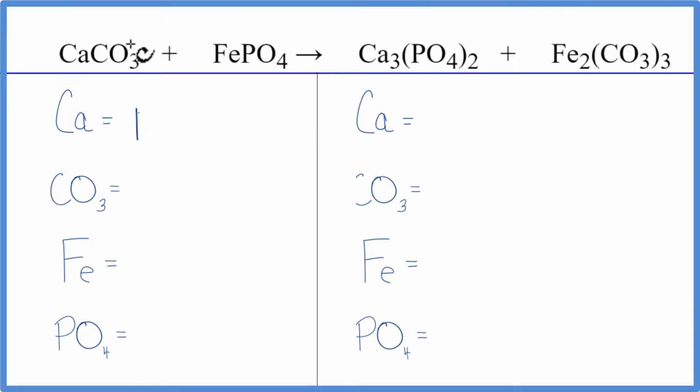We have one calcium, and then I have this CO3, this carbonate ion. I have it here, and then I have it again over here. I'm just going to call it one thing. And for double displacement reactions, that makes it a lot easier to balance.